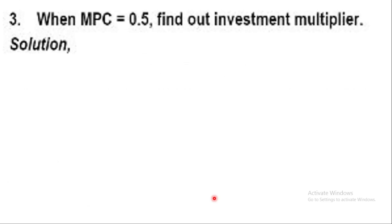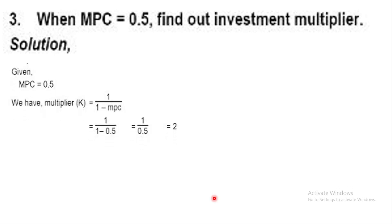Question 3: When MPC is equal to 0.5, find the investment multiplier. The formula is K = 1 upon (1 minus MPC). So K = 1 upon (1 minus 0.5) = 1 upon 0.5 = 2.